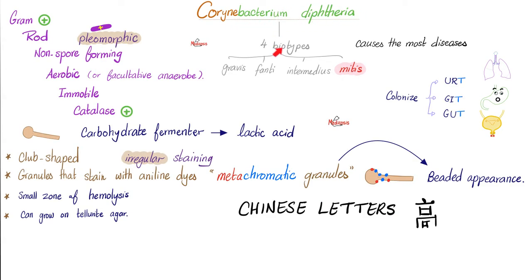Corynebacterium diphtheriae has four biotypes; the most clinically significant is mitis — the mighty mitis. It is very irregular and pleomorphic with different shapes, irregular staining, and granules of different colors. It is club-shaped, produces a small zone of hemolysis, and grows on tellurite agar — this is how you culture it.